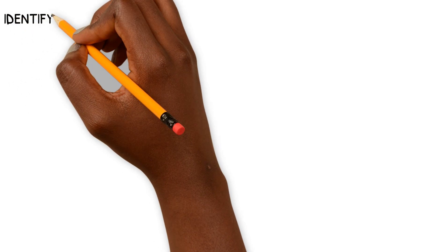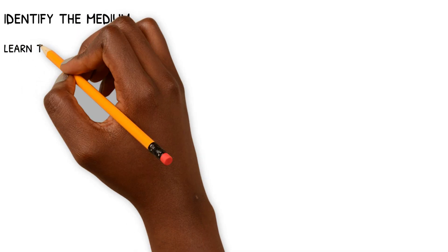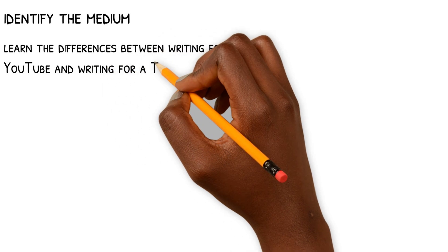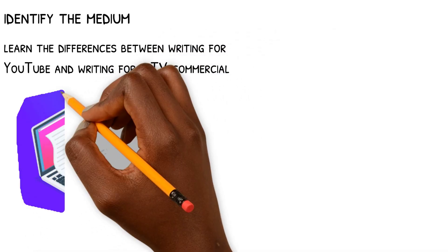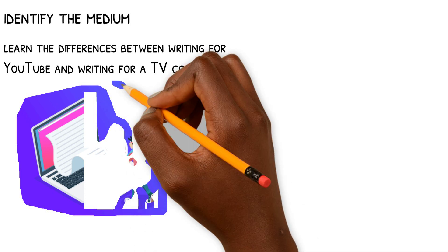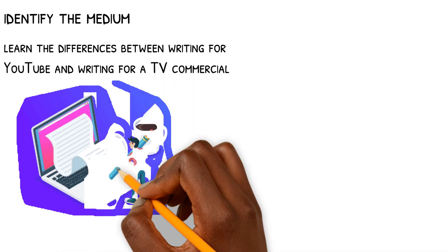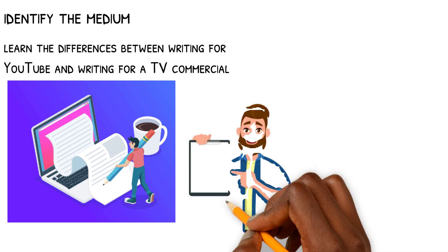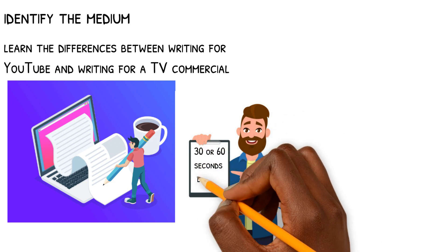Before you start writing your marketing script, identify the medium. For instance, learn the differences between writing for YouTube and writing for a TV commercial. With YouTube videos, you can write longer, more informal scripts that you can upload yourself. However, if you're writing a script for a TV commercial, you must fit whatever content you can into a video that's only 30 or 60 seconds long.